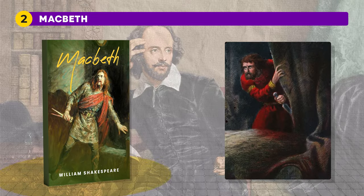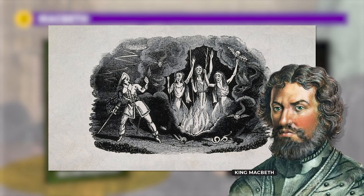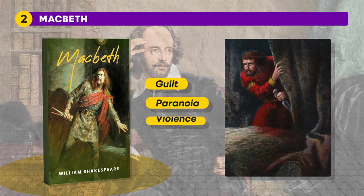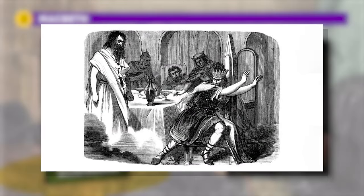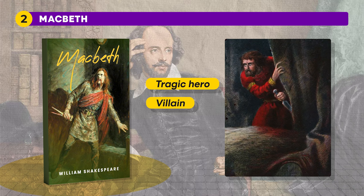Next is Macbeth, the title character and tragic protagonist of Shakespeare's play by the same name. At the beginning of the play, Macbeth is a courageous and loyal Scottish nobleman who receives a prophecy from three witches that he will become king. Encouraged by his ambitious wife Lady Macbeth, he murders King Duncan and seizes the throne. However, Macbeth's actions lead to a spiral of guilt, paranoia, and further violence. He becomes increasingly tyrannical and isolated, haunted by his conscience and visions of his victims' ghosts. His ambition and desire for power ultimately lead to his downfall, making him both a tragic hero and a villain.